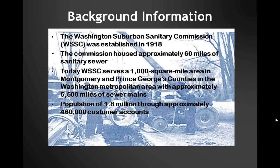WSSC was established in 1918, initially housing approximately 60 miles of sanitary sewer. Today we're the eighth largest water and wastewater utility in the nation, serving a 1,000 square mile area in Montgomery and Prince George's counties in the Maryland metropolitan area surrounding Washington, D.C. Our system now contains approximately 5,500 miles of sewer mains, with the majority of construction taking place in the 1940s and 1950s. We serve a population of 1.8 million people through approximately 460,000 customer accounts.